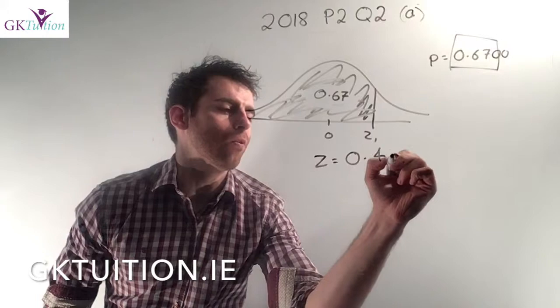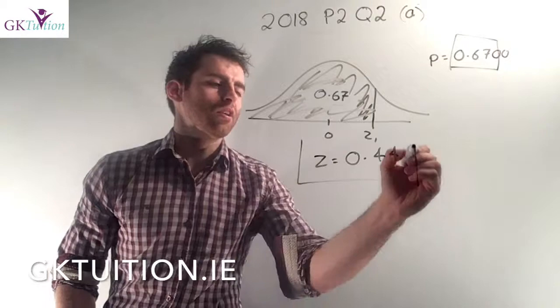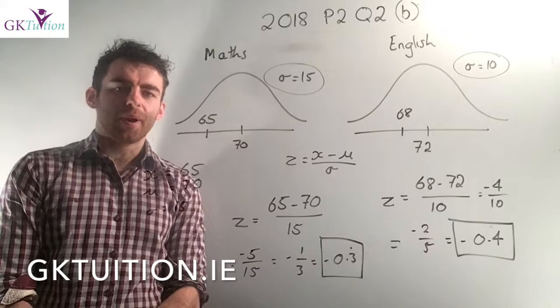The corresponding z-score for a proportion of 0.67 is 0.44. So that's a z-score that represents a piece of data that is 0.44 standard deviations above the mean. For that question that's all you had to write — just find the corresponding z-score and that's it.